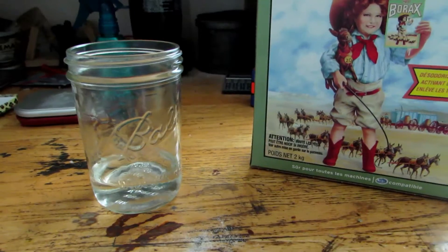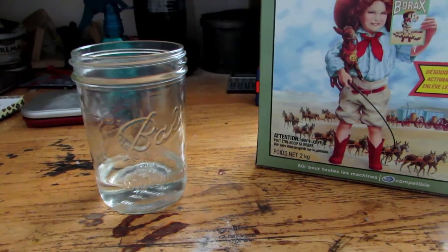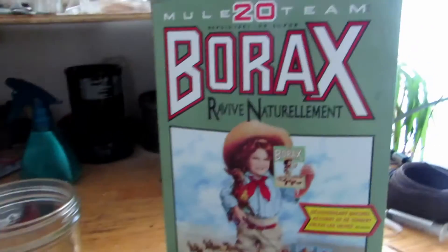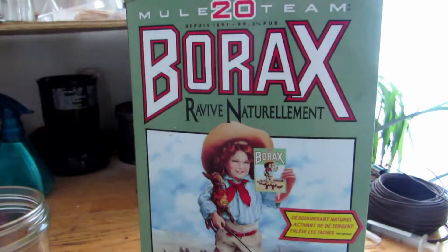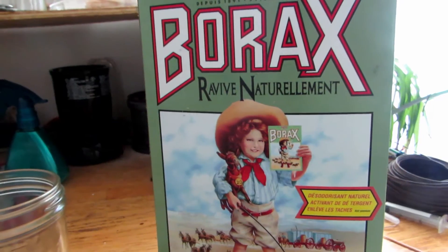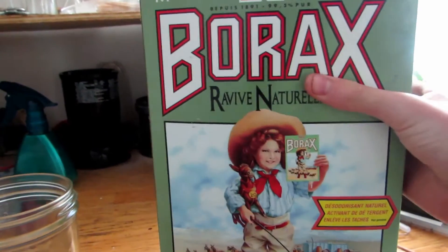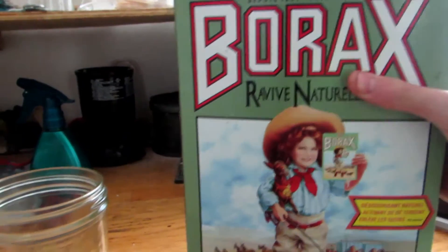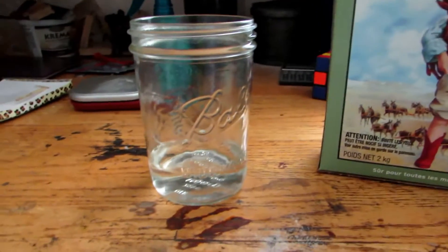Hey guys and welcome back to how to make elements from household materials. Today's element is going to be boron. Borax is a compound of boron which you can commonly buy at a store. The compound here is sodium tetraborate, which we're going to be turning into elemental boron.